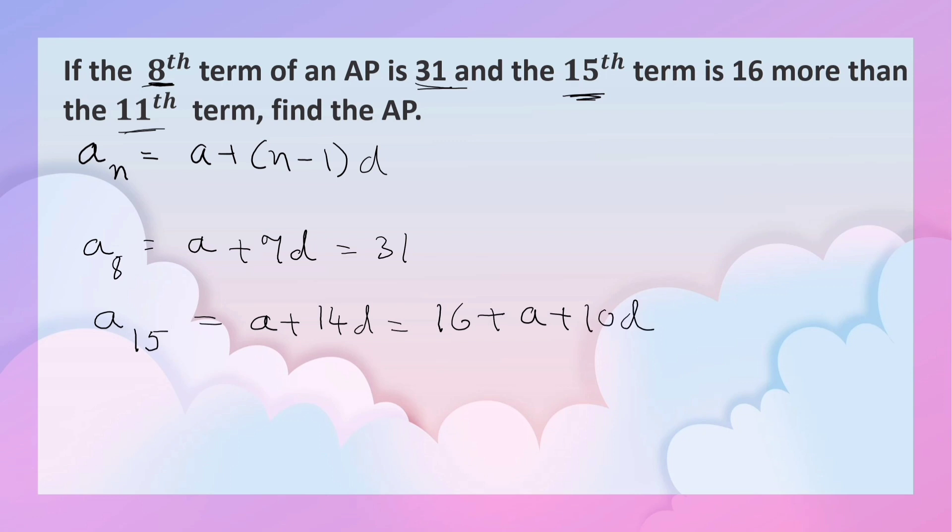We can rearrange the terms. A and a cancel if you transpose to this side. If you transpose 10d to this side, 14d minus 10d equals 16. This is how we get the common difference. 14 minus 10 is 4d. 4d equals 16, so the common difference is 16 divided by 4, which is 4.